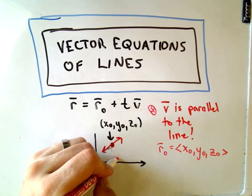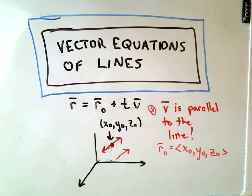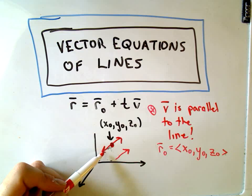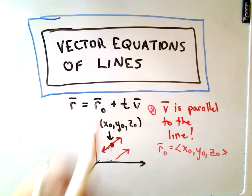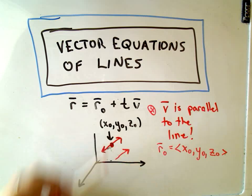So vector v is just any vector that has the same direction as the line that goes through the point. It can be any length that it wants to be as long as it's parallel, and this r₀ is just a position vector that points at the point that the line should go through.